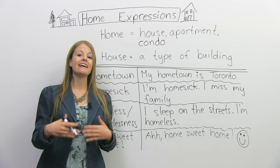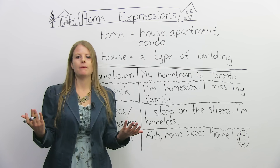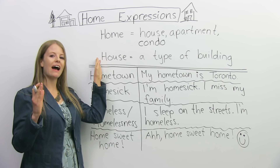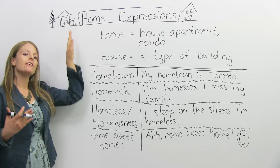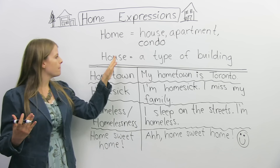A mouse's home might be in a wall. Or some people — maybe their home is in a tent. So a home is a place where you live. This is different from a house. A house is one specific type of building — it's not an apartment, it's not a condo. Home refers to anywhere a person lives, but a house is a type of building.